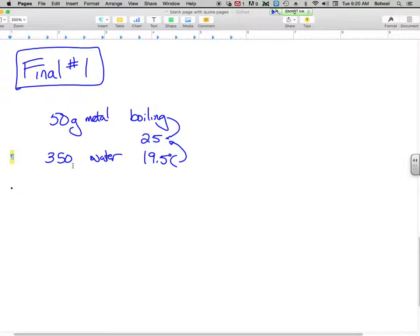So we're looking for the specific heat of the metal, the only thing we don't know. So here of course we know that the Q lost by the metal is going to equal the Q gained by the water.